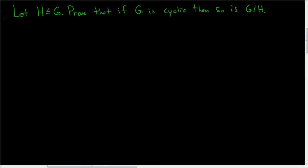Let H be a subgroup of G. Prove that if G is cyclic, then so is the quotient group G/H. Proof: